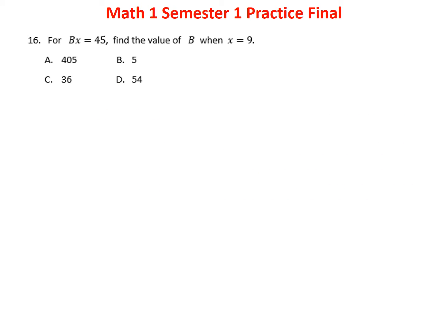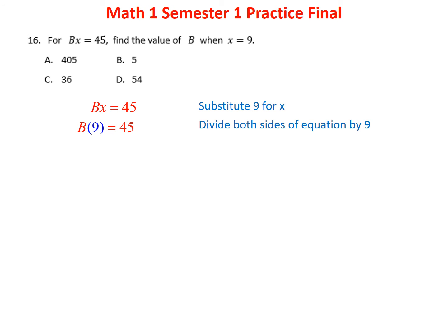Problem sixteen is straightforward. Given the formula Bx equals 55, plug in x equals 9: B times 9 equals 45. Dividing both sides by 9, B equals 45 divided by 9, which is simply 5. The answer is B.